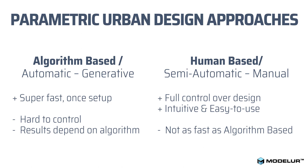What we recommend is starting with algorithm-based to quickly produce some results, but we believe the development still needs a human hand to craft a high-quality living environment. That's why in Modeler we offer both approaches — we have the massing generator which quickly produces basic results to give you a feeling of the density, but the tool is mostly focused on the part where the human designer crafts the space itself.